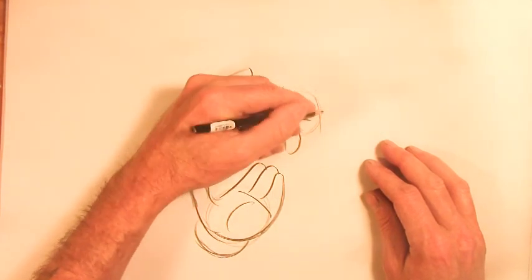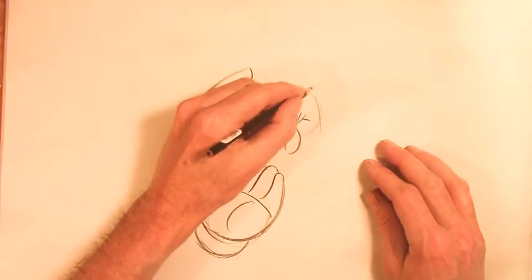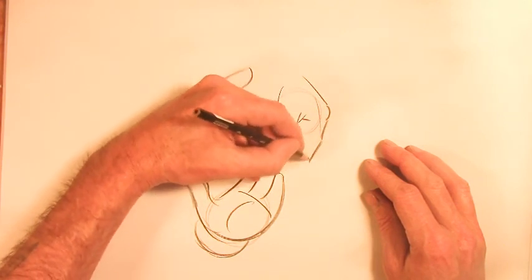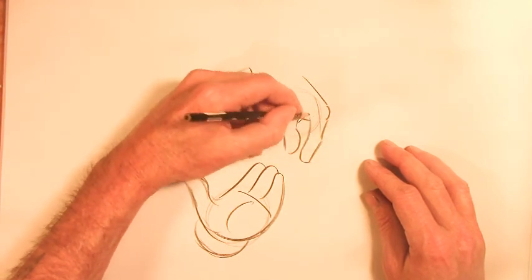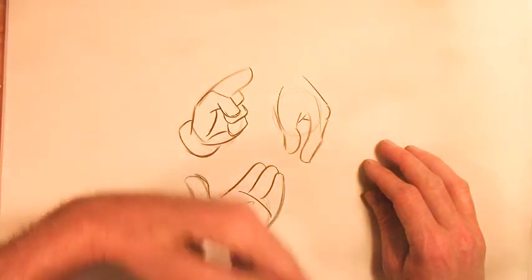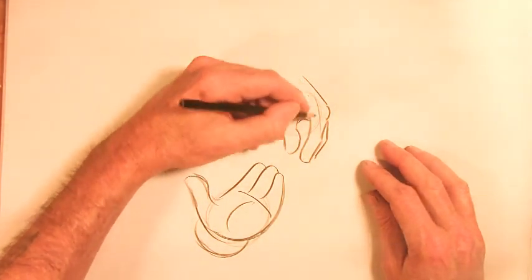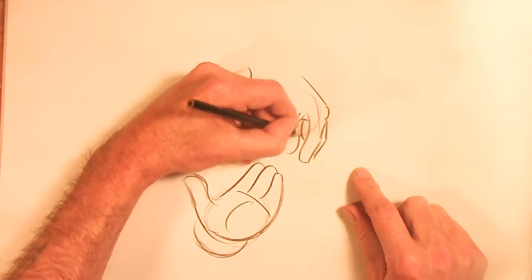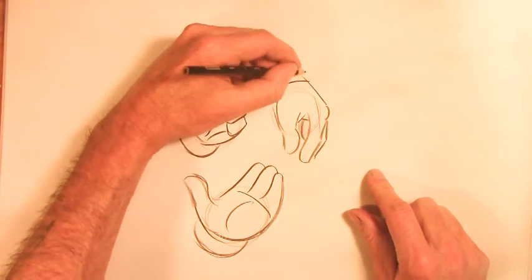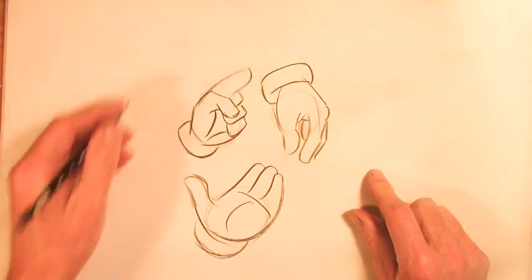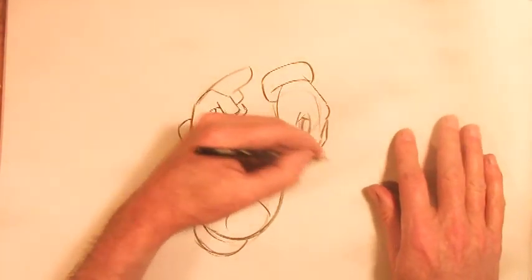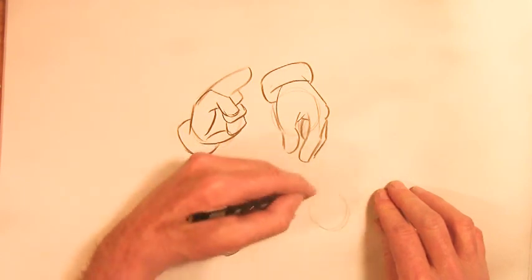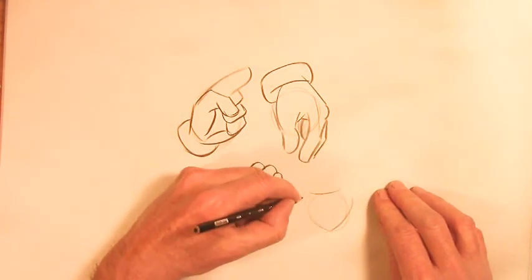This comes down like that. Knuckle. That finger is kind of behind this one. And then fingers in the background. And that's really it. There's not a lot to it. You just build it and practice.